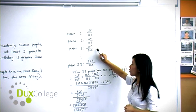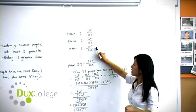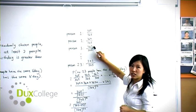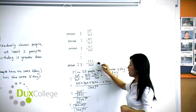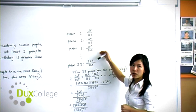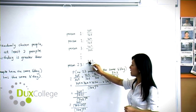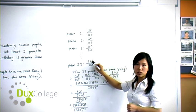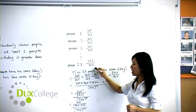Now person 3 cannot have the same birthday as person 1 and person 2. That's why it's 363 out of 365, and et cetera. Person 23 cannot have the same birthday as the previous 22 people. So that's why it can only land on 343 days out of the 365 days.